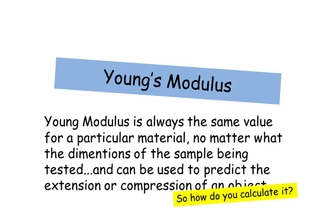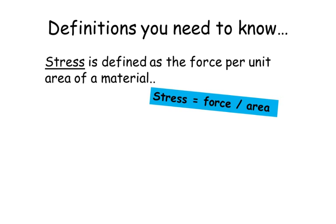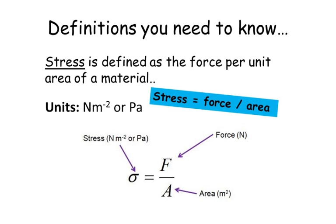So how do you calculate it? Before we work out how to calculate Young's modulus, we need to know some definitions. Firstly, stress. Stress is defined as the force per unit area of a material, and it can be calculated by taking stress equals force over area. The units of stress are newtons per meter squared, or pascals, which is exactly the same as pressure. The symbol for stress is sigma, and that's equal to the force divided by the area.